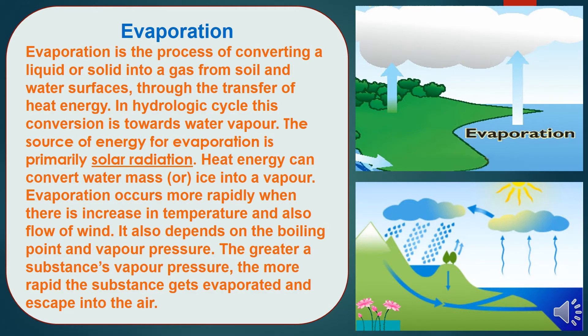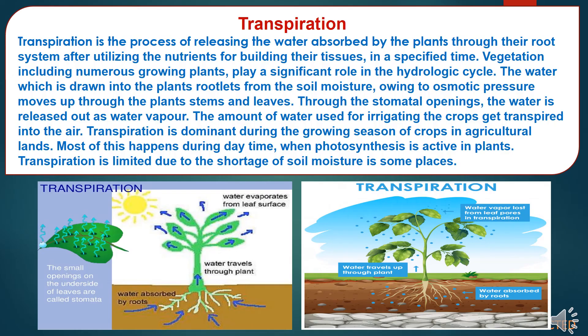The next hydrological cycle component is evaporation. Evaporation is the process of converting a liquid or solid into a gas from soil and water surfaces through the transfer of heat energy. In the hydrological cycle, this conversion is towards water vapor. The source of energy for evaporation is primarily solar radiation. Heat energy can convert water mass or ice into vapor. Evaporation occurs more rapidly when there is an increase in temperature and also flow of wind. It also depends on the boiling point and vapor pressure; the greater a substance's vapor pressure, the more rapidly the surface gets evaporated.